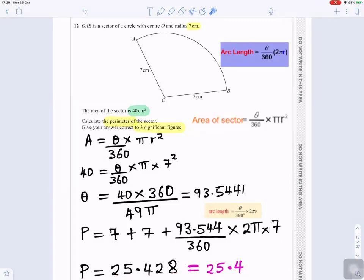But they want the answer to three significant figures. Very important to check it, how they want you to give the answer. And that will give you 25.4.